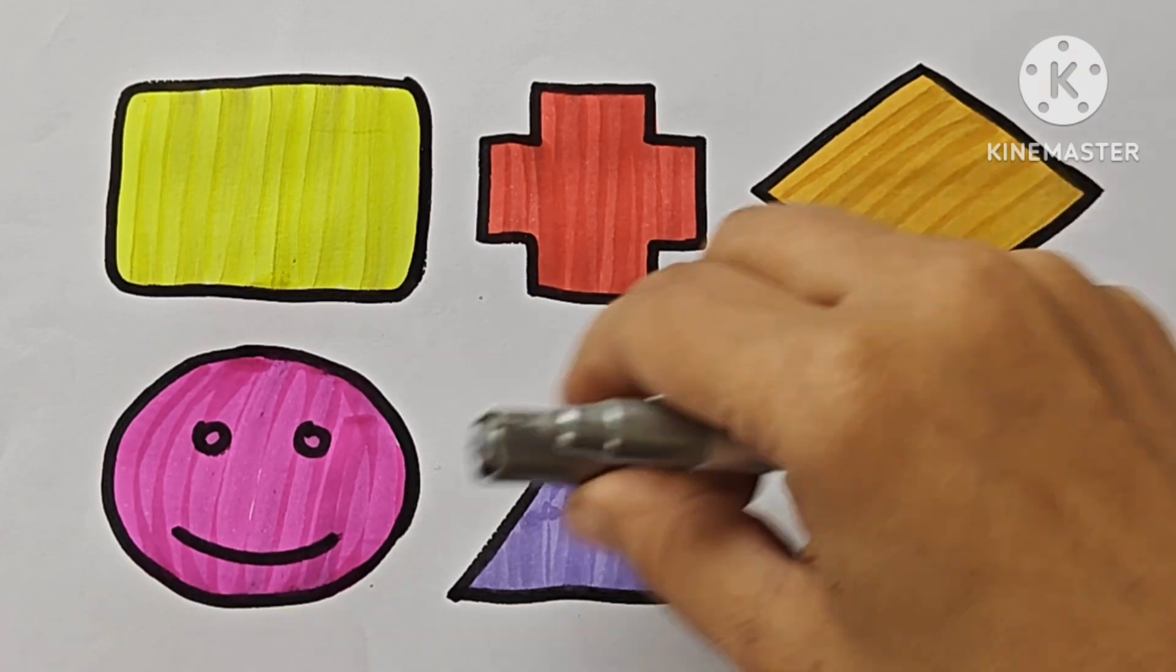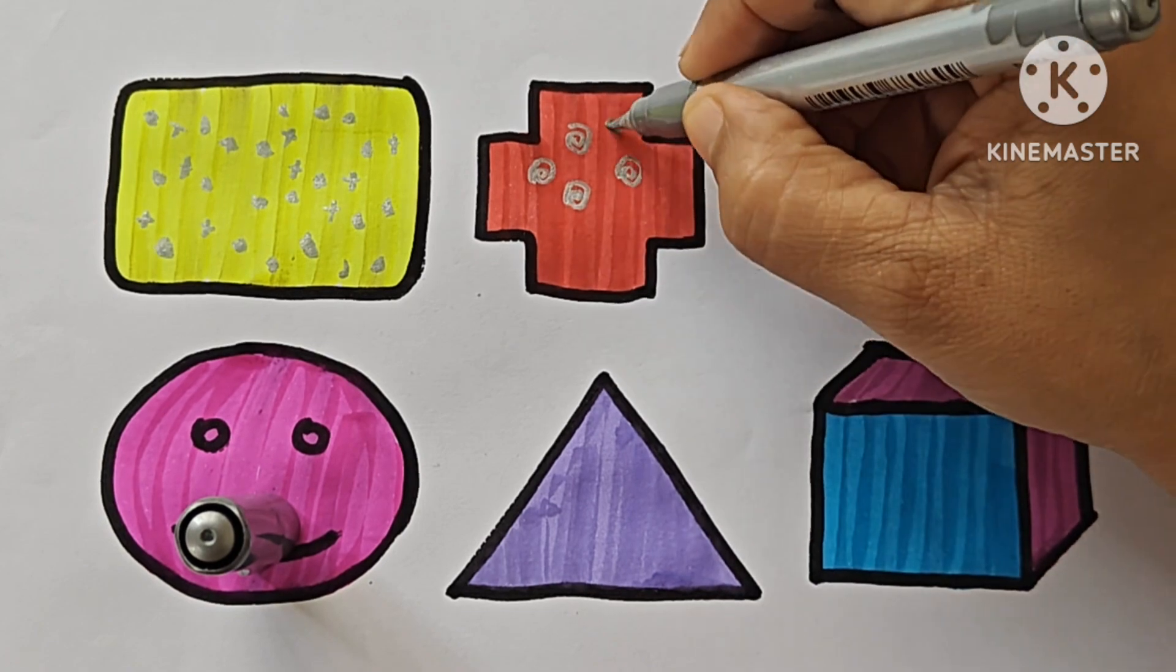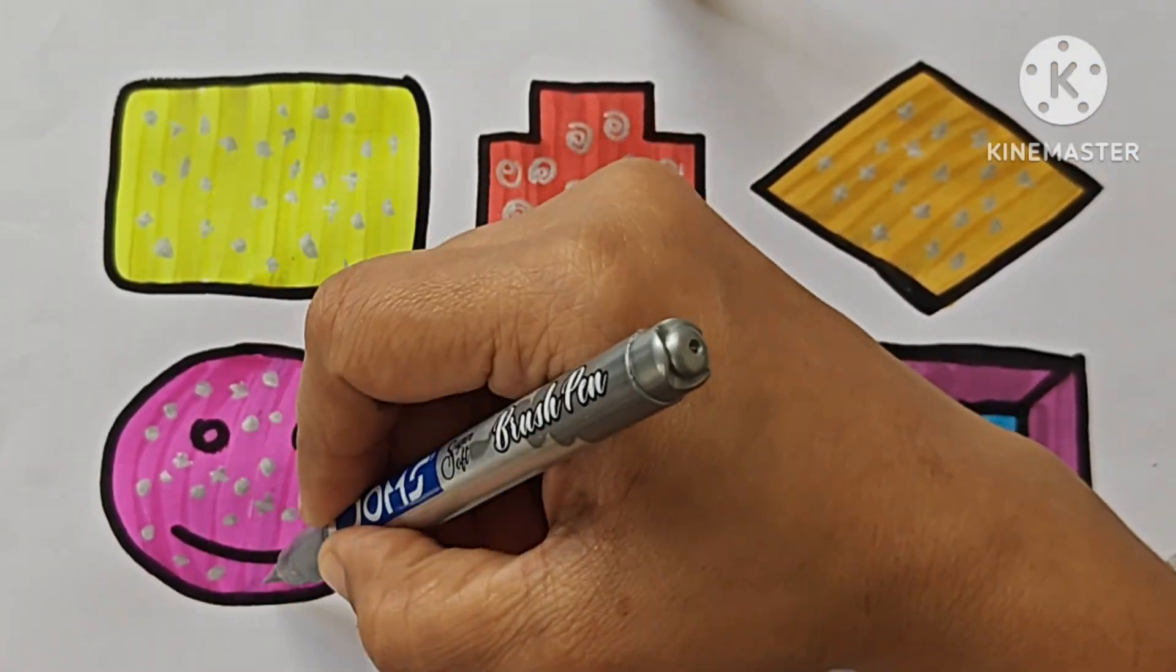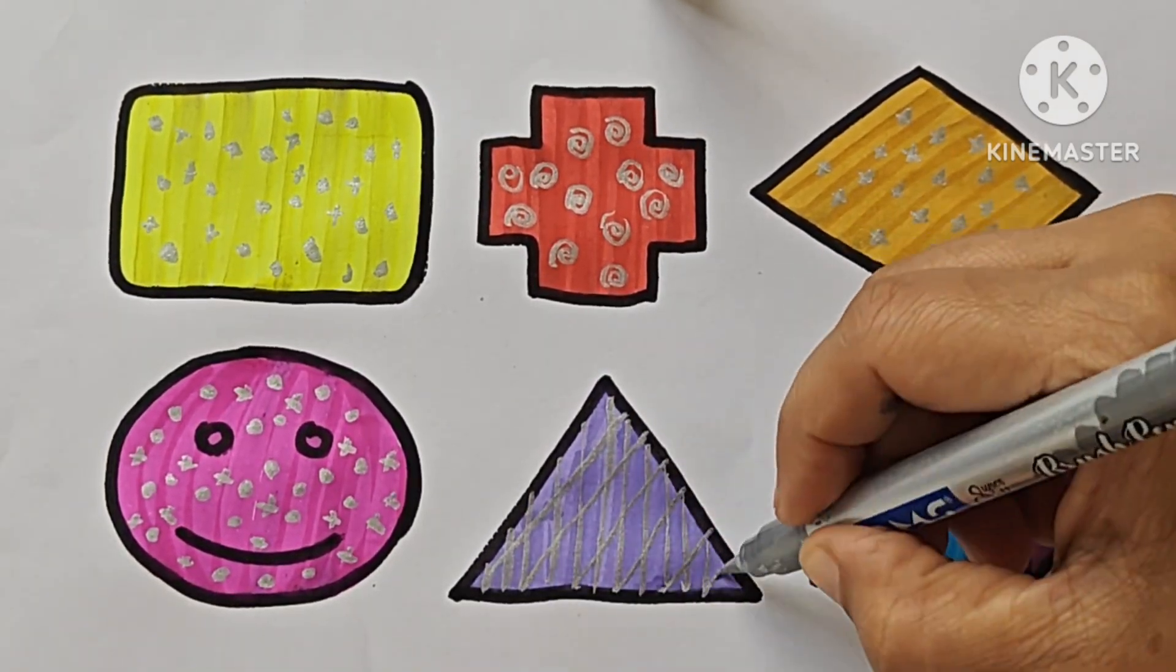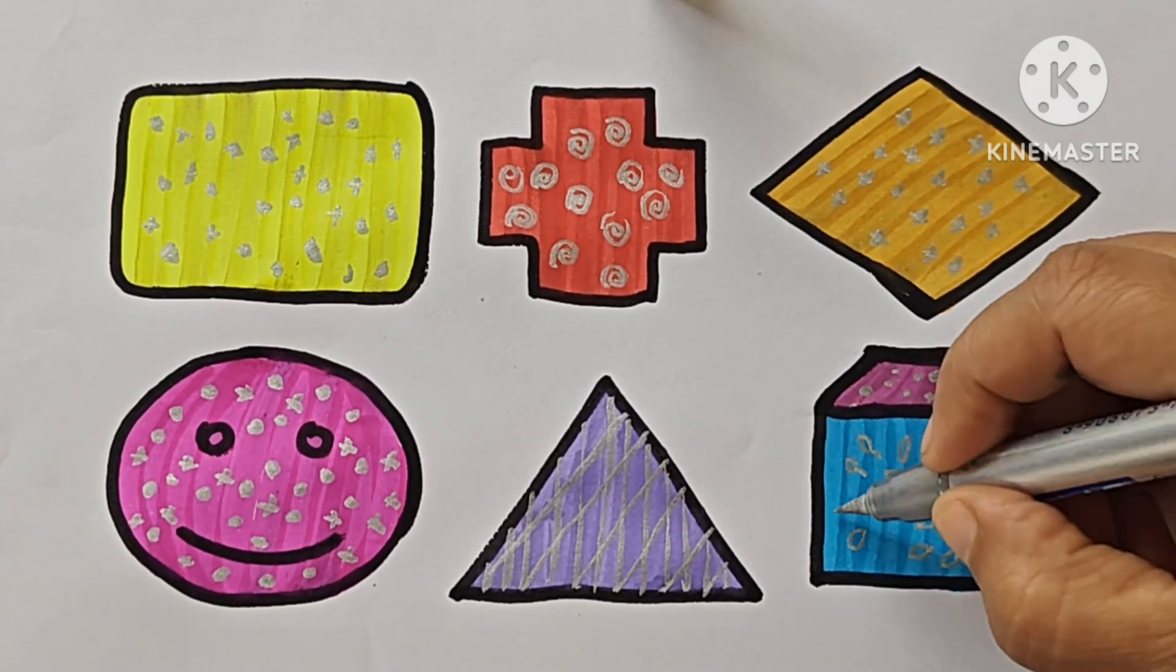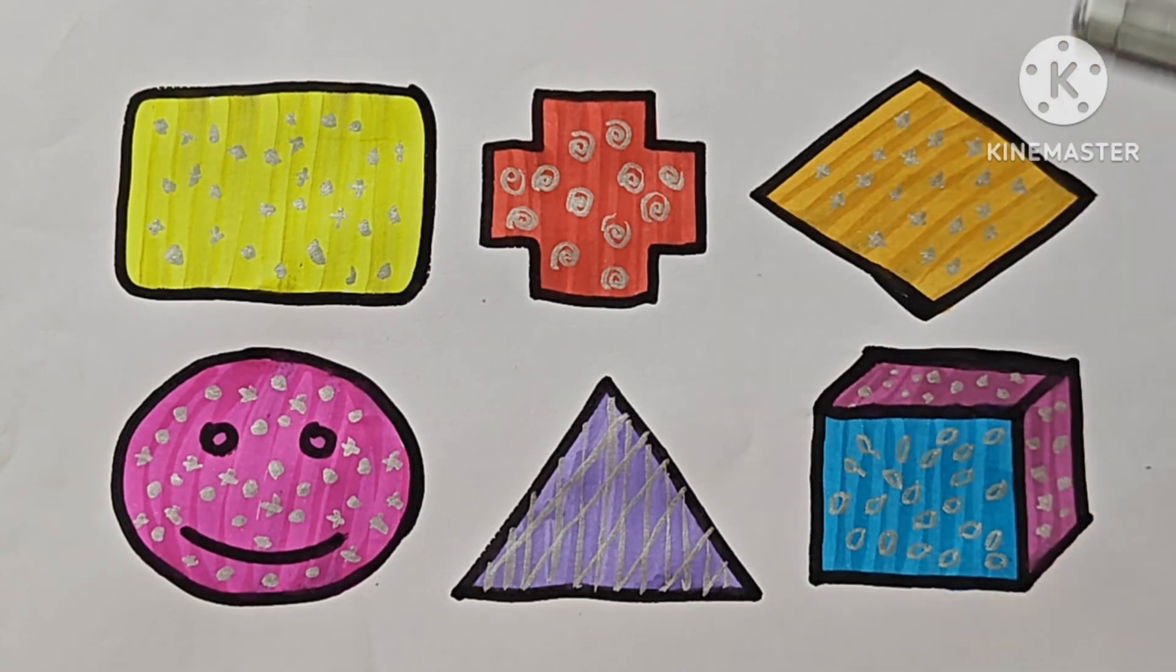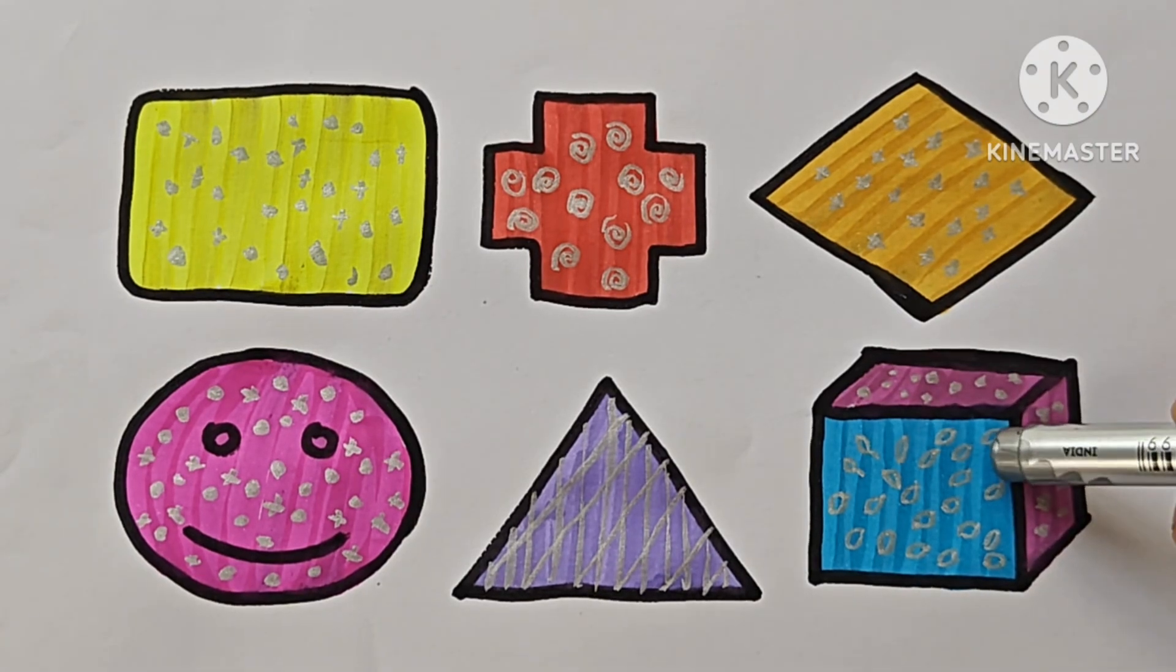Silver color. This is rounded rectangle. Cross, also called addition symbol. Rhombus or diamond. Smiley emoji. Triangle. This is cube, it has six faces.